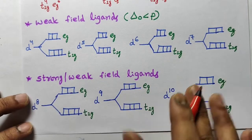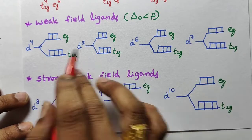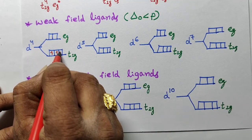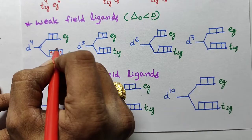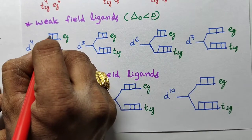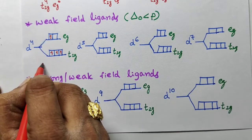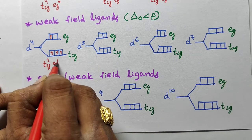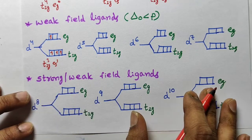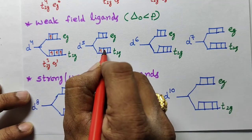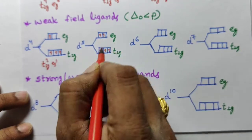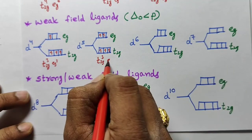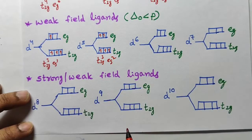Now let us discuss weak field ligand. In presence of weak field ligand, for d4: one, two, three electrons fill t2g, energy difference is less, so the fourth electron enters into eg — giving t2g³ eg¹. For d5: t2g³ eg².